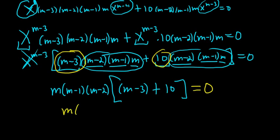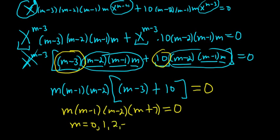So we have m, m minus 1, m minus 2. And this one looks like it's going to be m plus 7. That's all equal to 0. So we get four distinct roots that are all real. So 0, 1, 2, and negative 7.